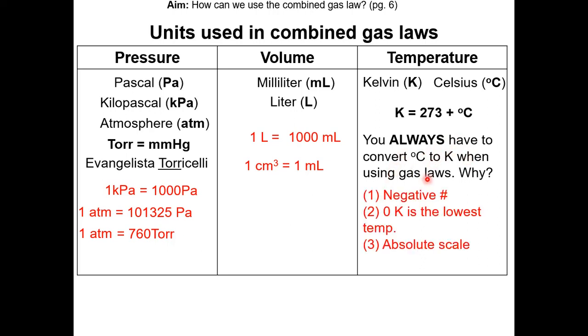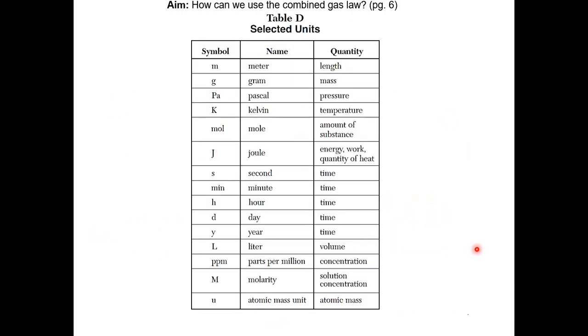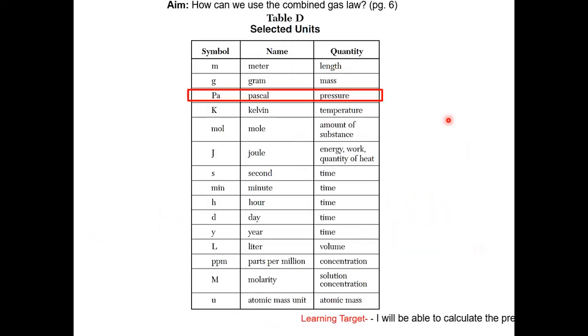Why is that? Because to avoid negative numbers — 0 Kelvin is the lowest temperature and is the absolute scale. The units can be found on Table D on your reference table.